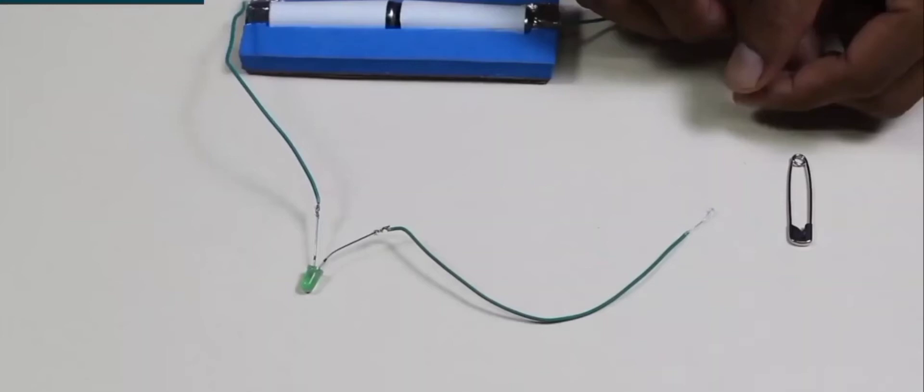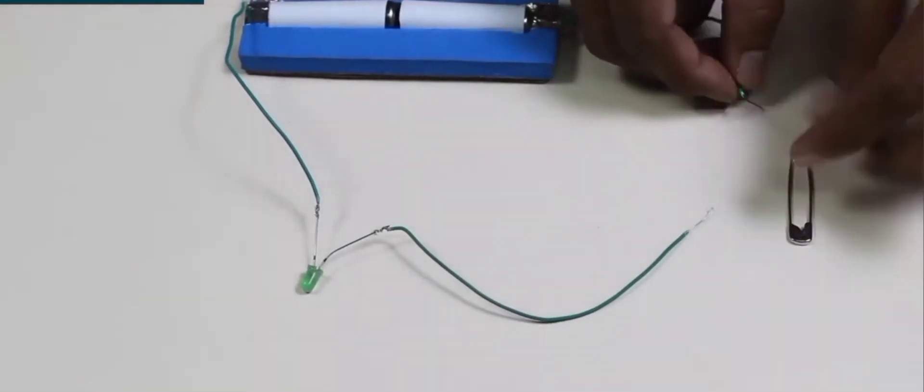Now in the picture we can clearly see that the circuit is broken as the two ends of the wires are not connected to each other. What we will do is we will connect the wires with the help of a safety pin.